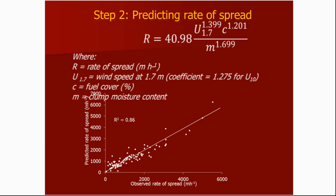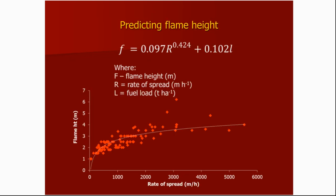Rather than crunching all the no-spreading fires into the equation, we separated out the no-go fires from the go fires. So you need to go through that step-one process — will it spread or not? If yes, now we can go into the rate-of-spread equation. The equation is again a fairly simple relationship of wind speed, fuel cover and moisture content — slightly weakly non-linear. We managed to get a pretty good relationship; the R-squared value is pretty tight. That's from 150 of those 186 fires used in model development. When we tested against the 36 validation fires, the R-squared dropped back to about 0.78 — still pretty good. Once you've got rate of spread, flame height and fuel consumption can be predicted from that.